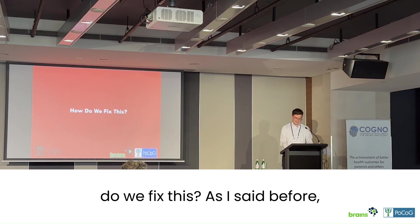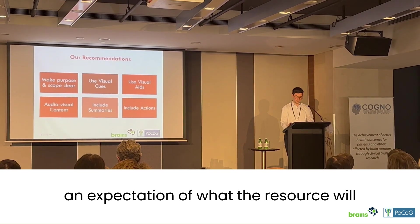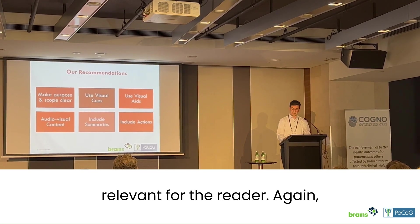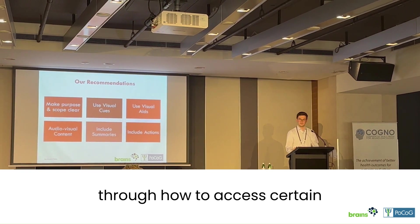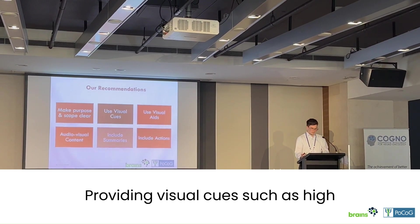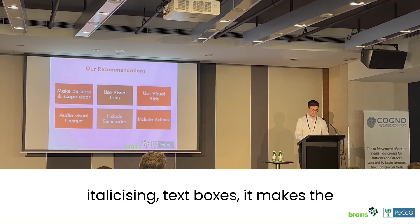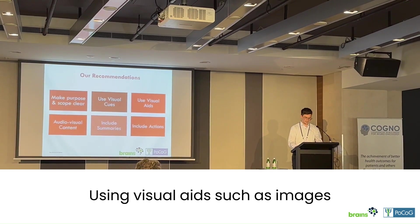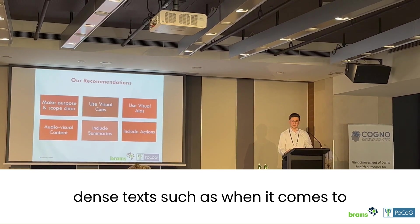So how do we fix this? Make the purpose and scope clear to set expectations of what the resource will do, what it will cover, and whether it's relevant for the reader — whether it's for educating or guiding people through how to access certain resources or navigate the health system. Provide visual cues such as high-contrast colours, dot points, bolding, italics, and text boxes to make important information really obvious. Use visual aids such as images or diagrams to supplement potentially dense text, such as when it comes to anatomy.